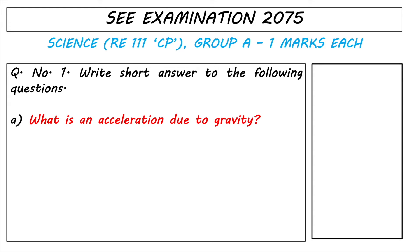Today we'll be solving questions from the SCE examination 2075 for science. Let's go through Group A — that's going to be one mark for each question. That's the entire question number one. Let's start with number A: what is acceleration due to gravity?